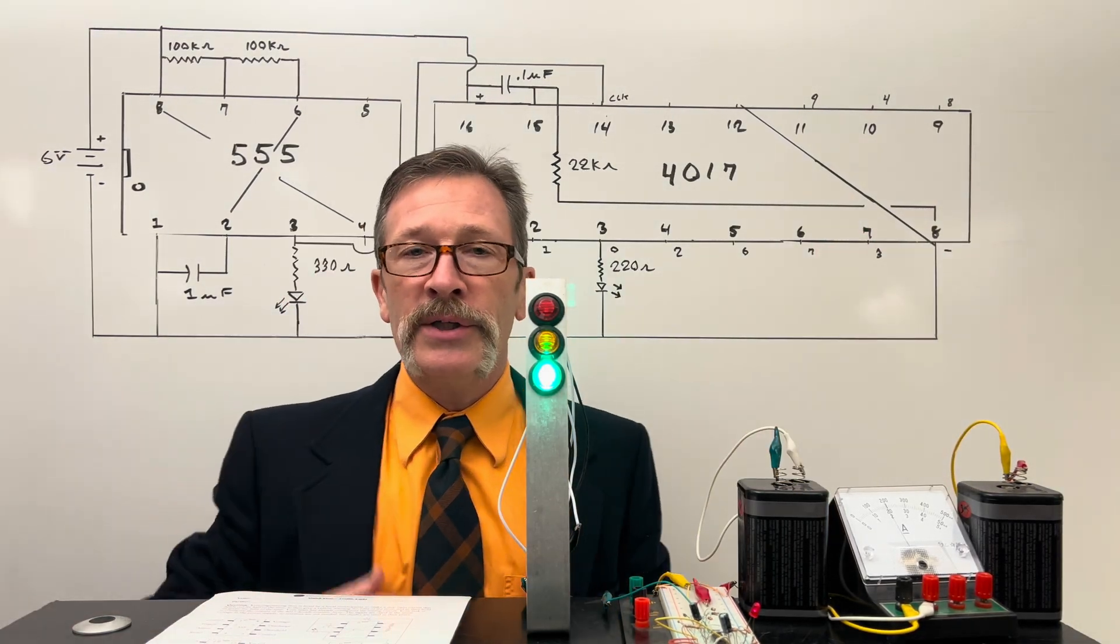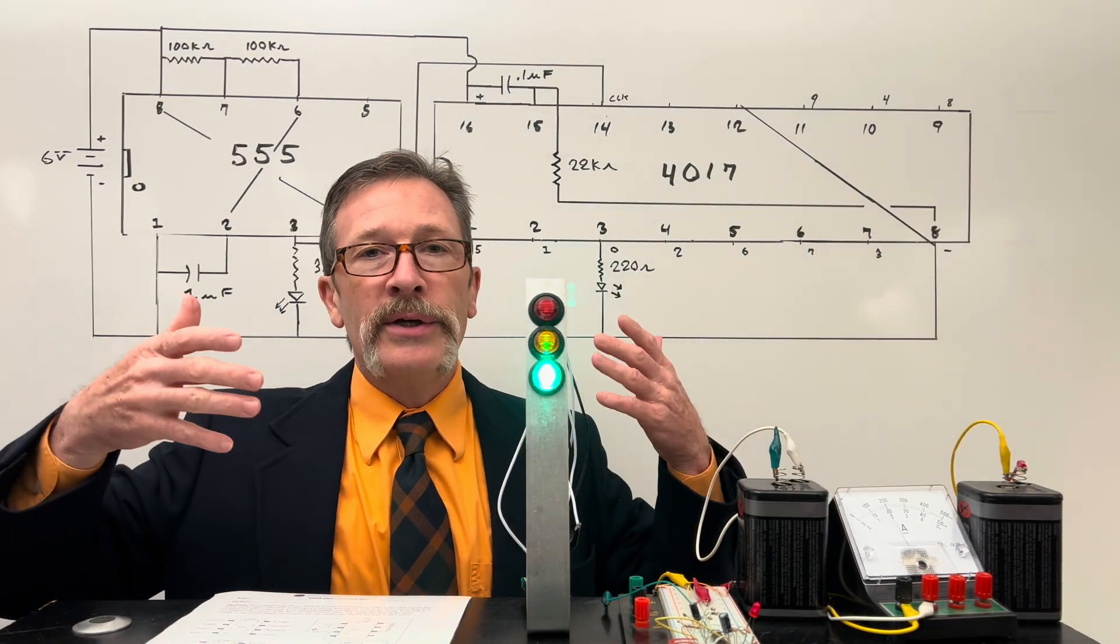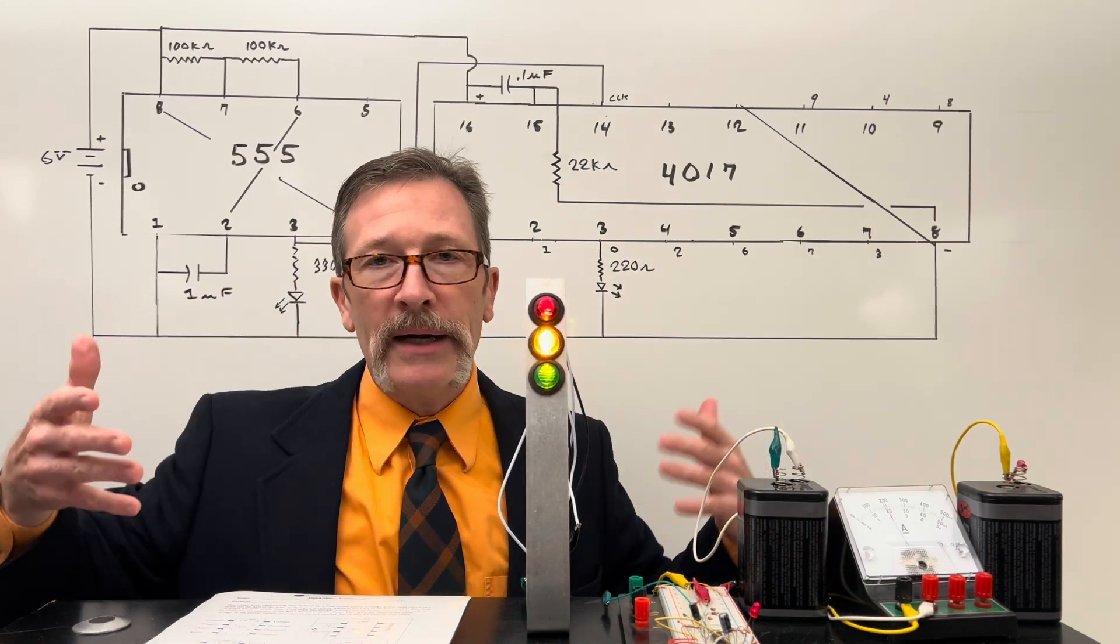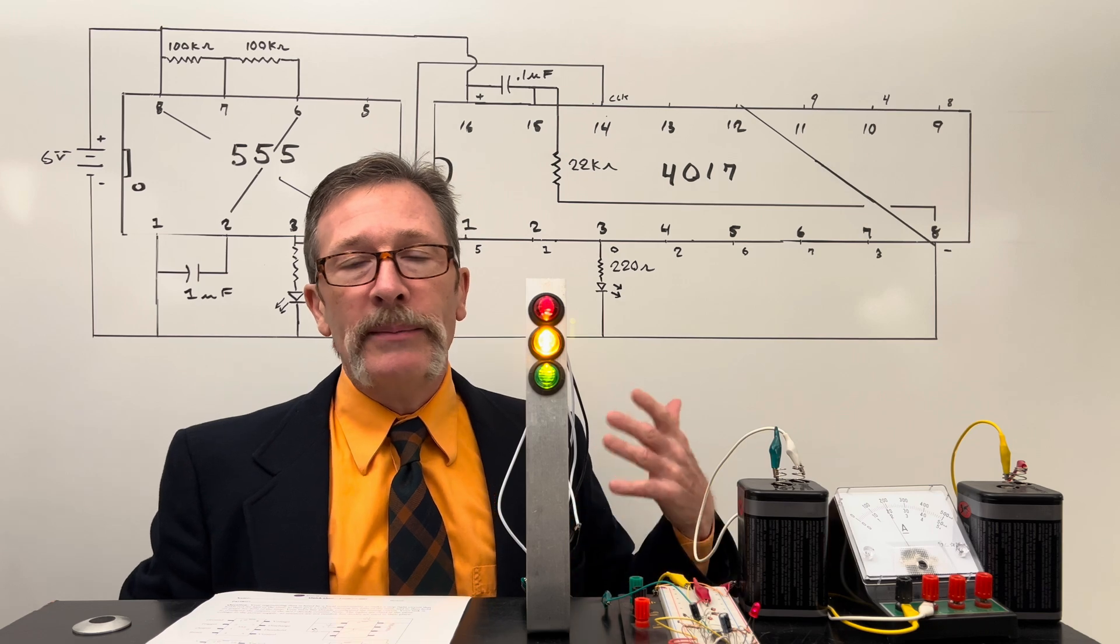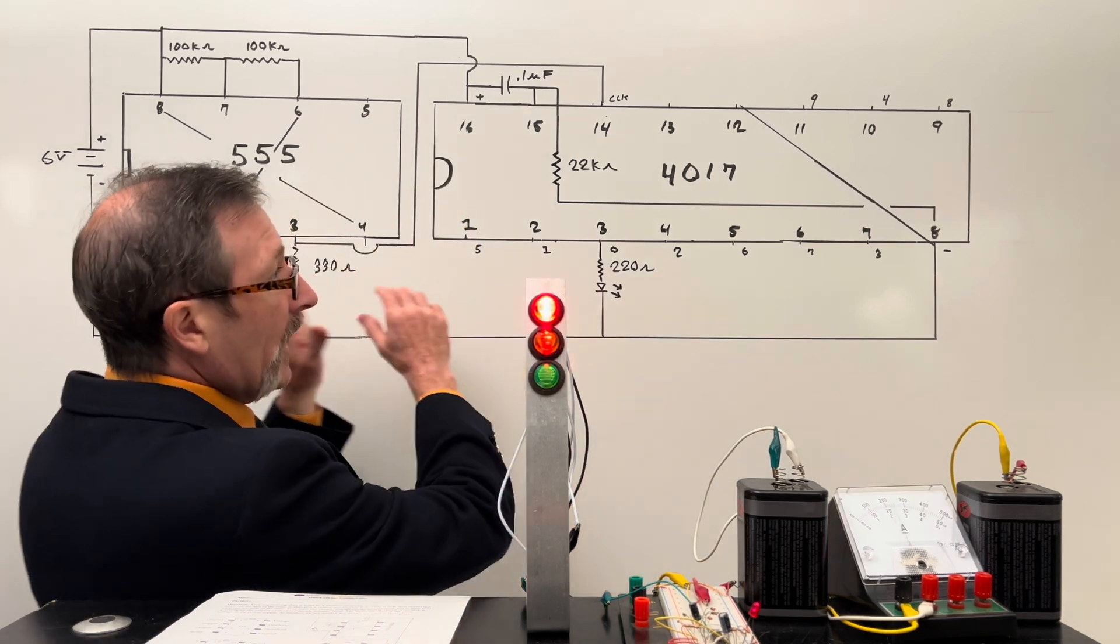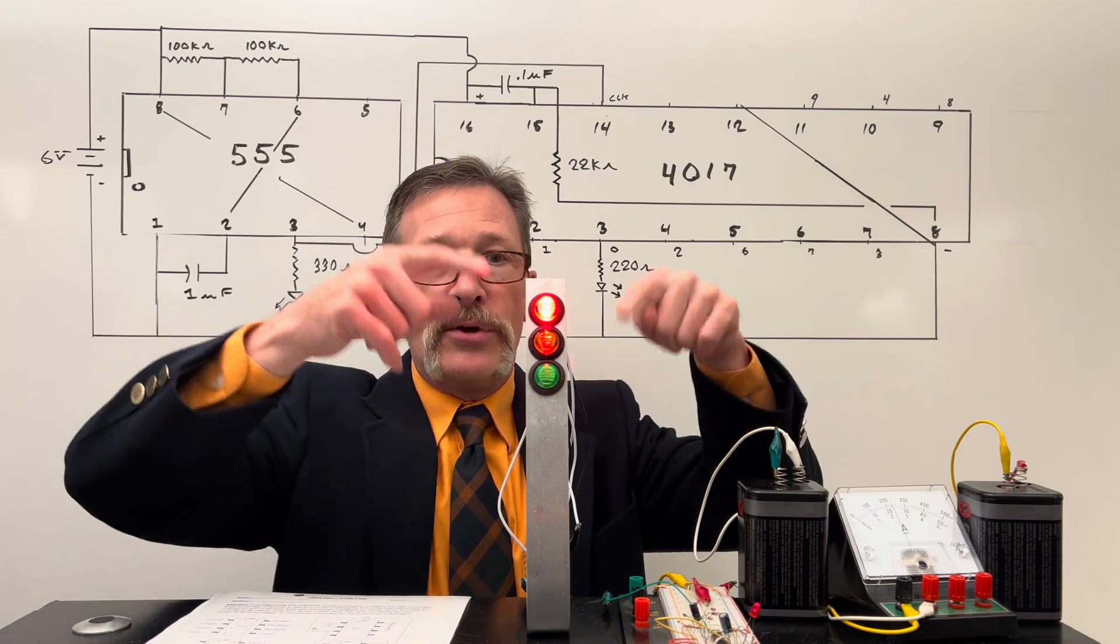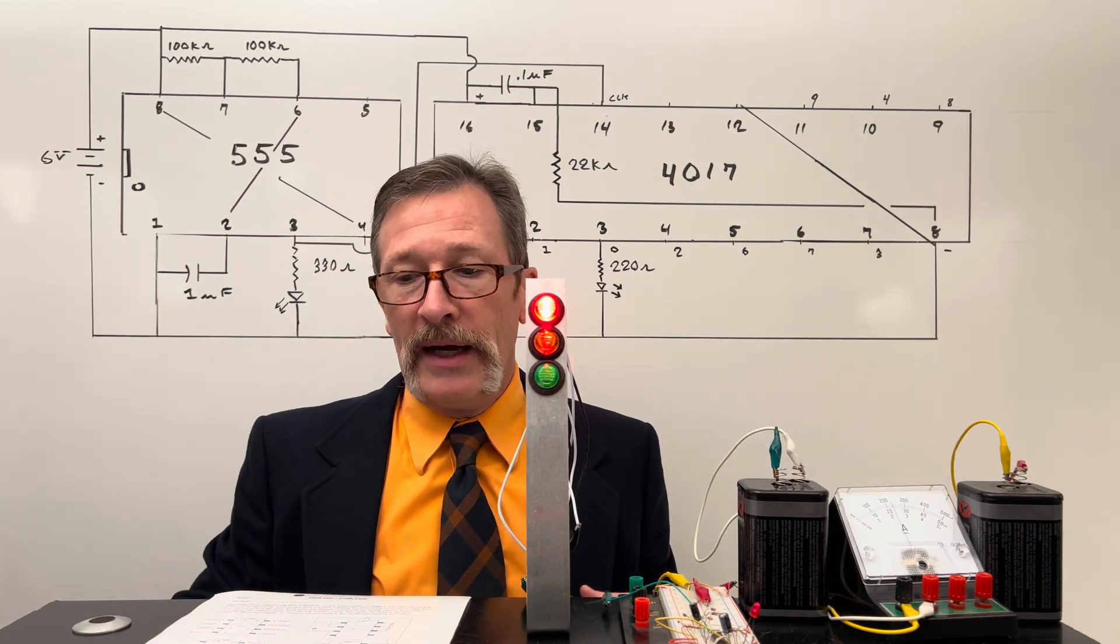For today's quiz, we're going to have you function as an engineer and your engineering department is going to need to make a stoplight. You've been hired for this. Your engineering firm probably has a team and they have made the circuitry. Your task is to now get the outputs correct so that it can make this stoplight.